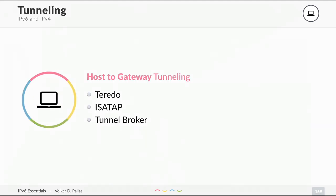The next type is host-to-gateway tunneling. This is for networks that don't have IPv6 connectivity but have hosts that need it. There are three main types: Teredo, ISATAP, and TunnelBroker.